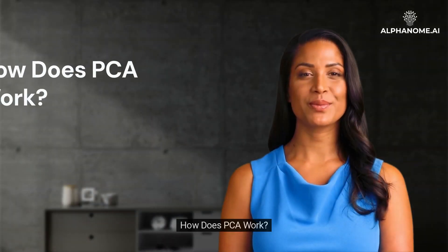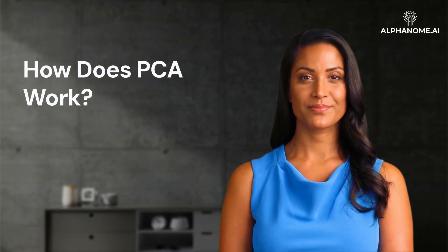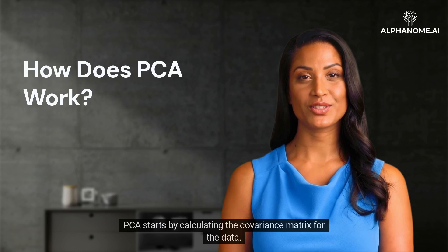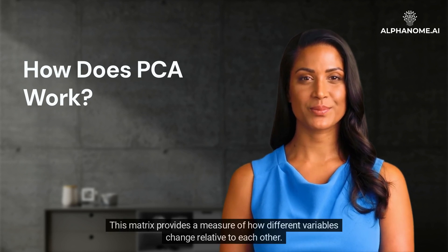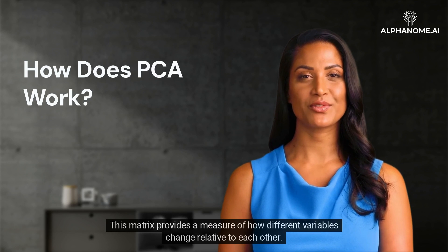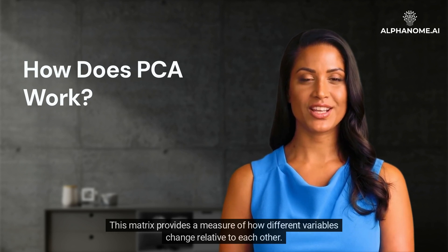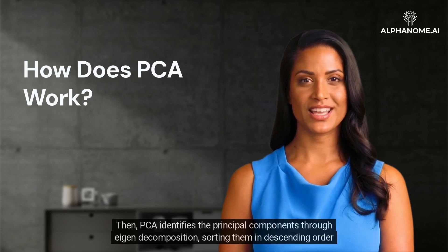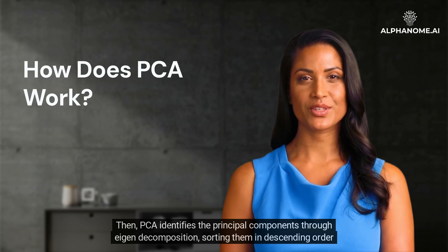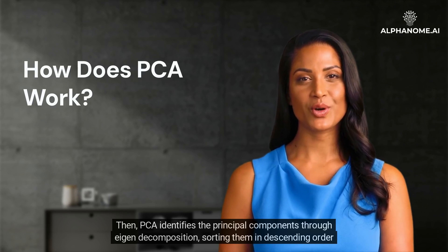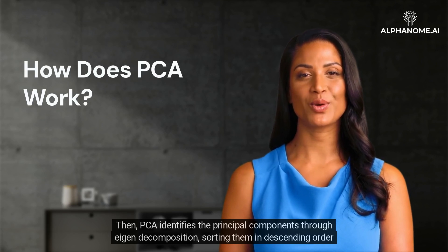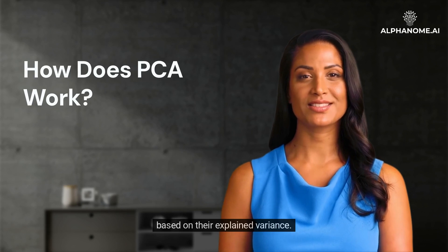How does PCA work? PCA starts by calculating the covariance matrix for the data. This matrix provides a measure of how different variables change relative to each other. Then, PCA identifies the principal components through eigen decomposition, sorting them in descending order based on their explained variance.